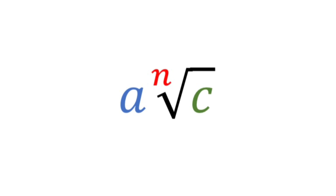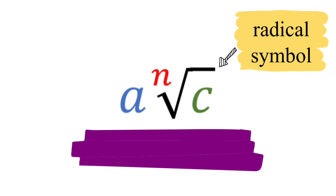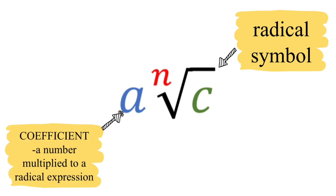Please remember that these are the parts of every radical expression. The first part is the radical symbol. The reason why this is called a radical expression is because it is an expression that contains the radical symbol. Our A here is called the coefficient — a number multiplied to the radical expression.